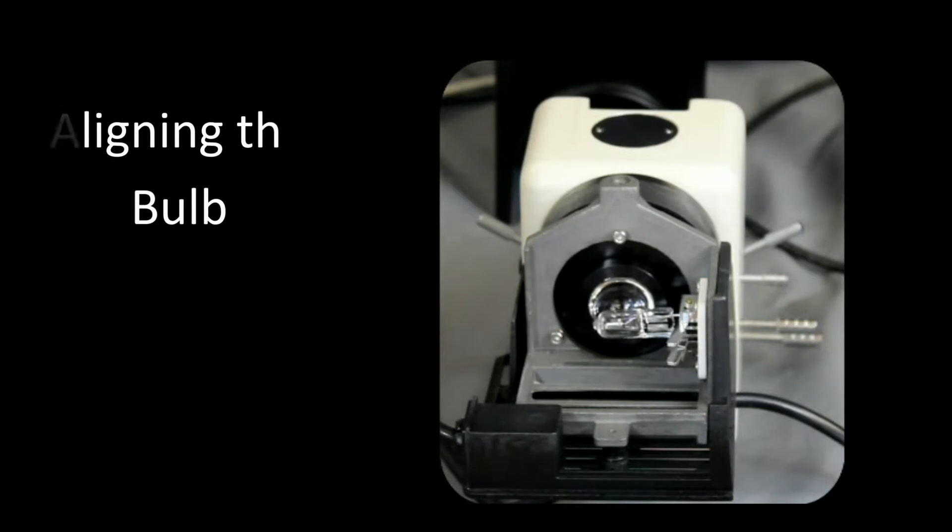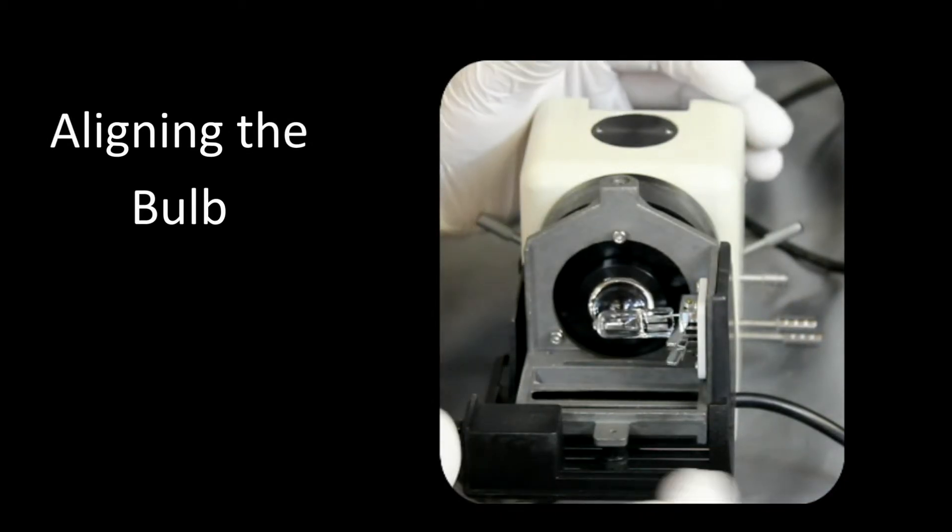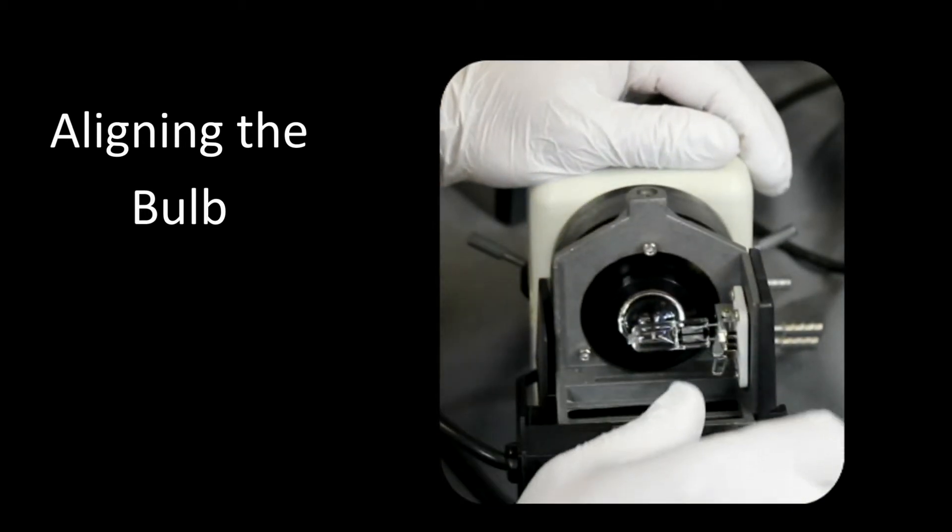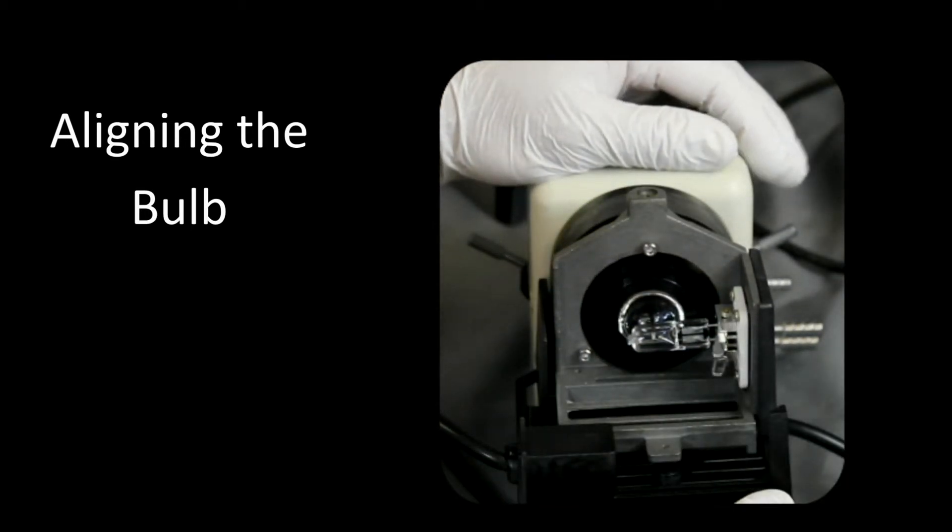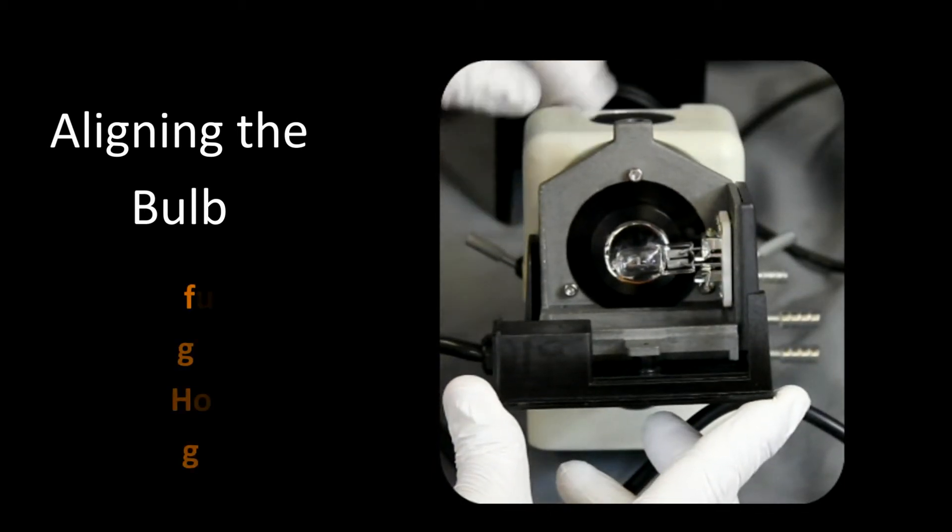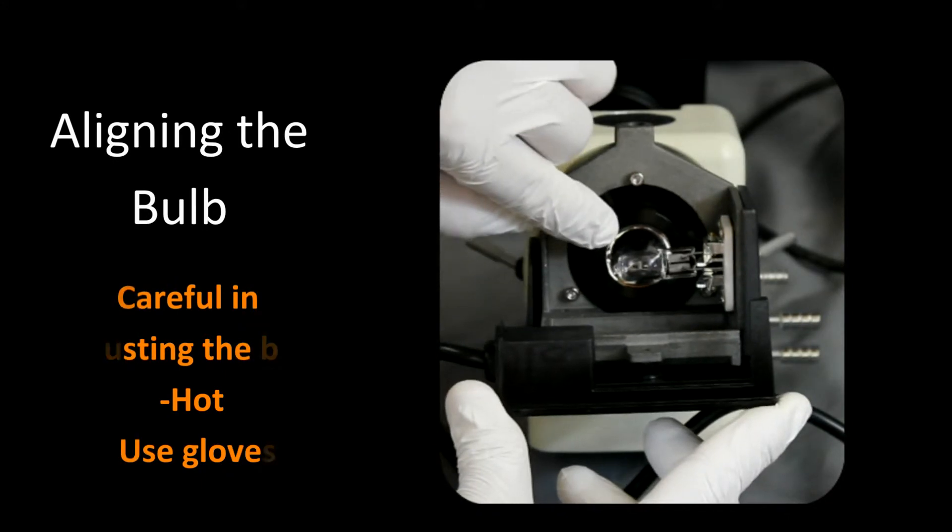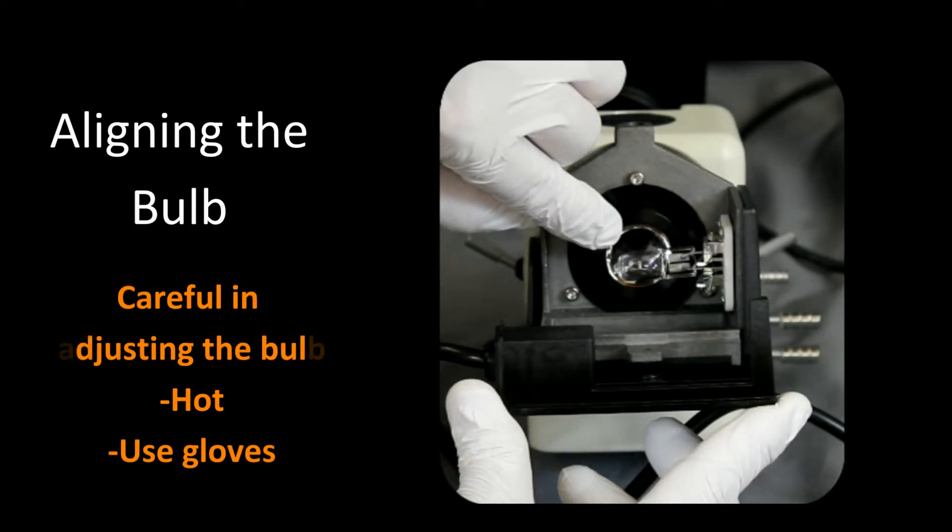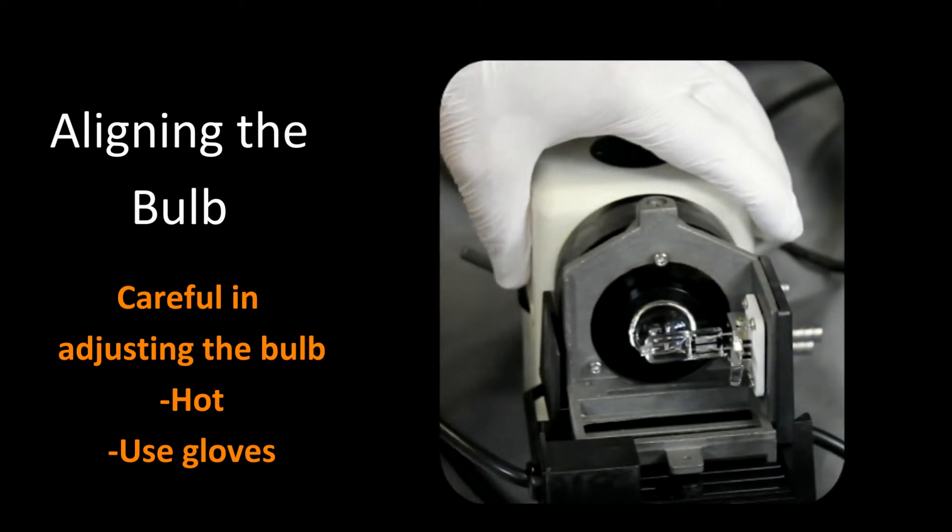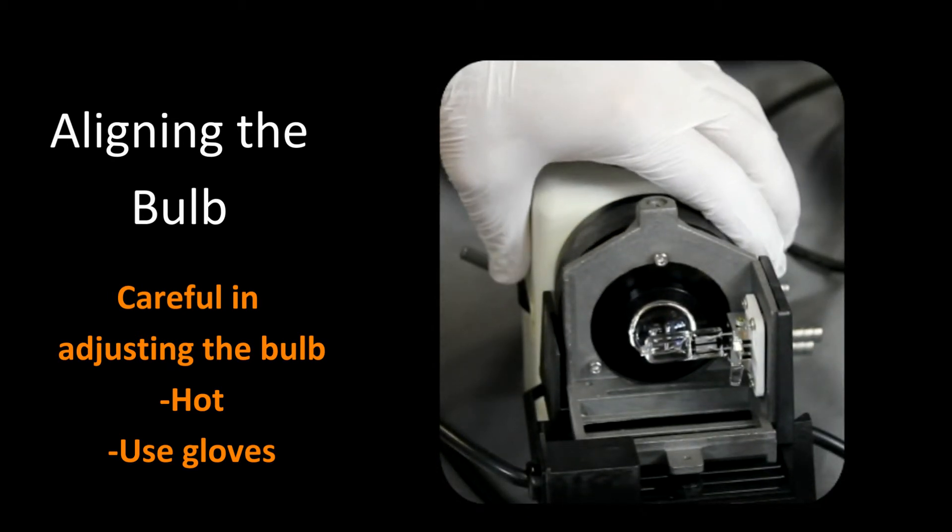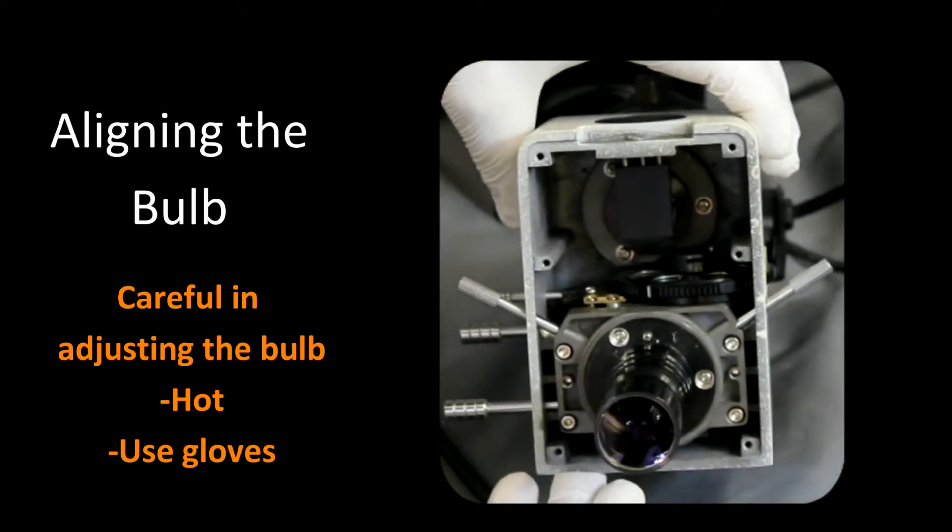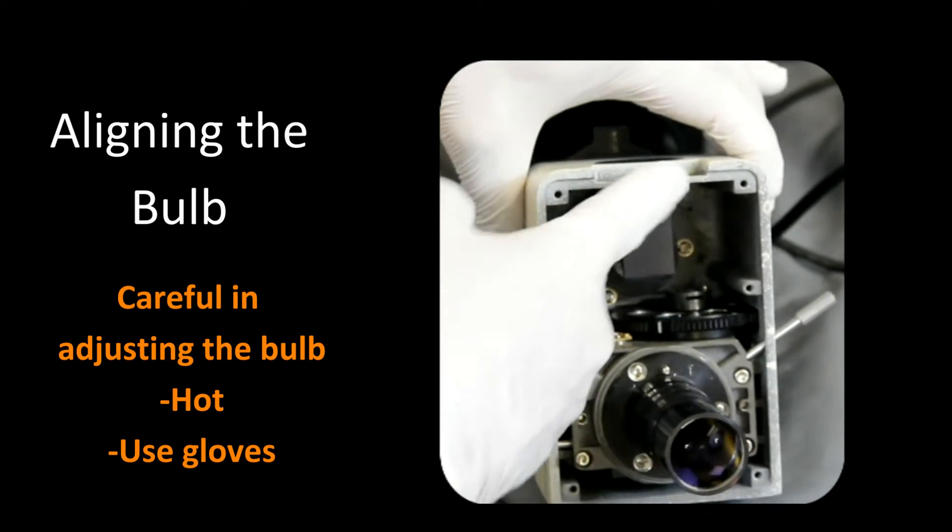To optimize the light through the optical system, first thing we want to do is we want to make sure that the light bulb is aligned. Now the light bulb by pressing these two levers here will allow it to pull out. So we want to do as a rough measurement is we want to have this aligned to about the center of this lens here. Now in many cases that might be sufficient enough, but if you really want to optimize the light, what you're going to need to do is you're going to need to take off the lamp housing and remove this cover plate here.